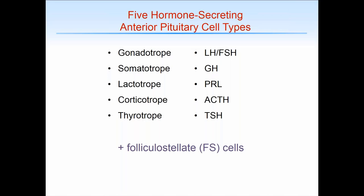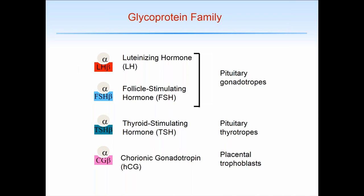Particularly important are the so-called support cells or folliculostellate cells. Over the last couple of decades, we've realized that these folliculostellate cells actually secrete a number of factors which are important for local regulation of secretion by the various cell types. There is a very robust local paracrine system acting in this gland. So let's talk about the pituitary glycoprotein family.